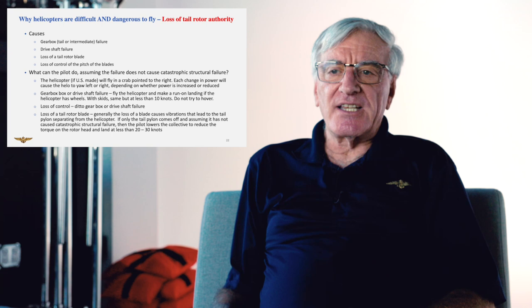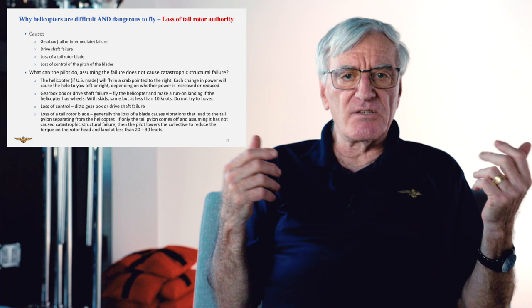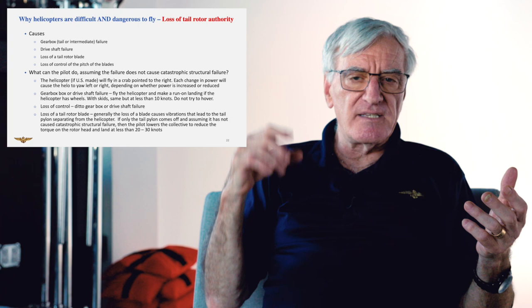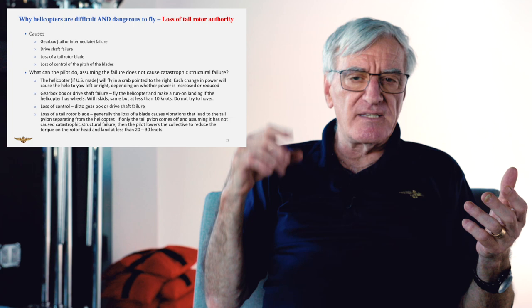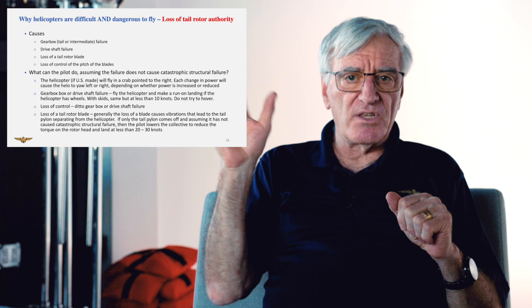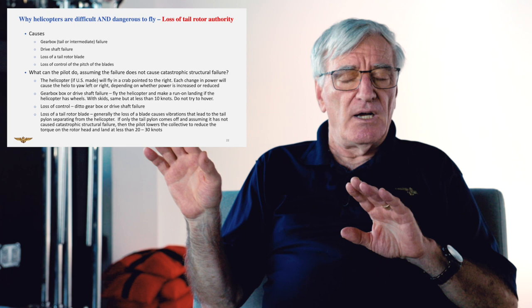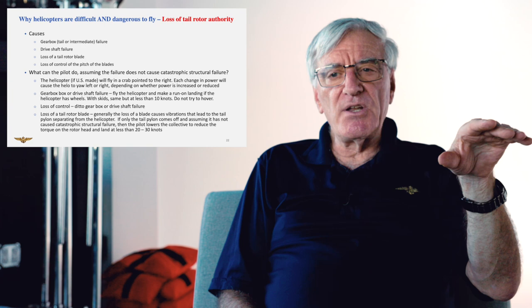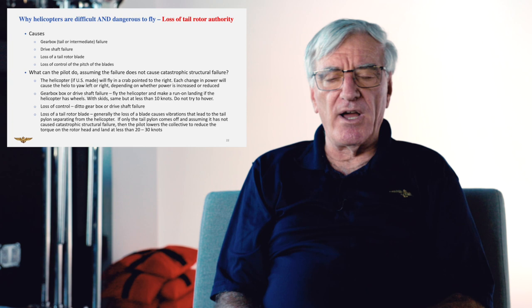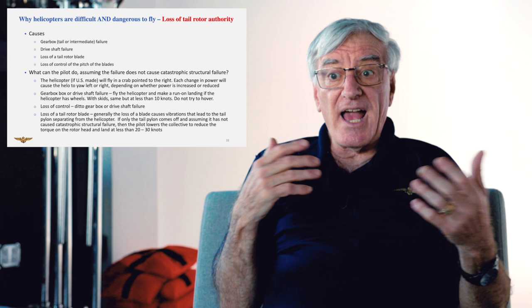The next one I want to talk about is the loss of tail rotor authority. That can come from a variety of things. It can come from a gearbox failure, either the tail or the intermediate gearbox. It can be caused by the drive shaft failing, either a bearing seizes and the thing doesn't turn, or it spins and breaks. You can lose a tail rotor blade, which generally is somewhat catastrophic. I'll talk about that in a second. Or you can lose control of the pitch of the tail rotor blades. Let's assume that the helicopter doesn't come apart when one of these things happens. So, what do you do? Actually, you don't have to auto-rotate. The helicopter will yaw dramatically to the left or right, depending on whether it's a French or American helicopter. So, you wind up flying the helicopter at a reduced airspeed somewhere around 70, 90 knots at about a 30-degree yaw, and you just kind of go that way.